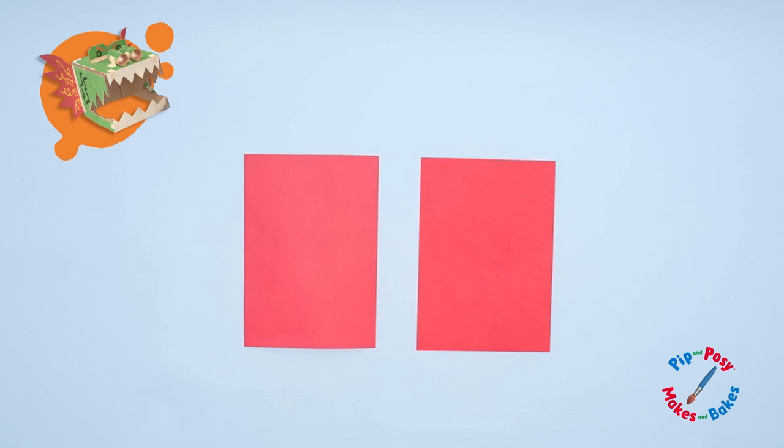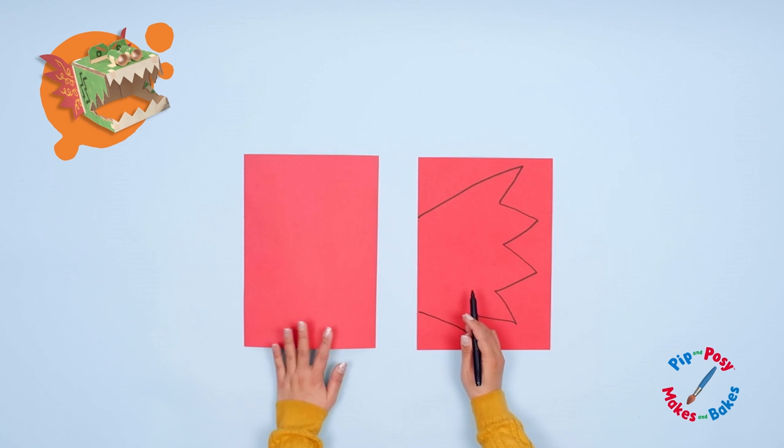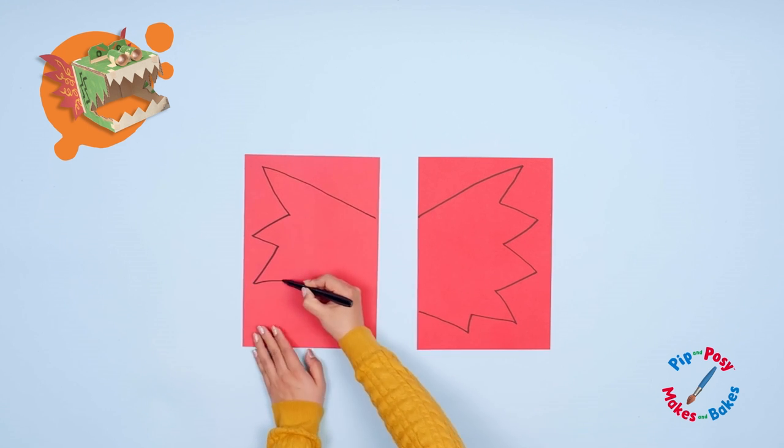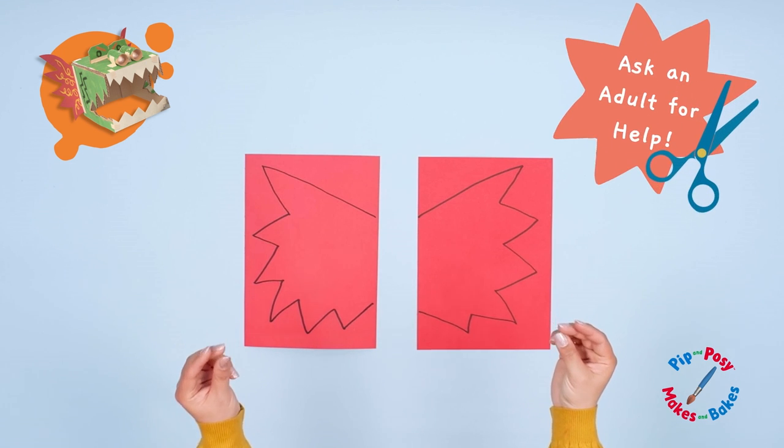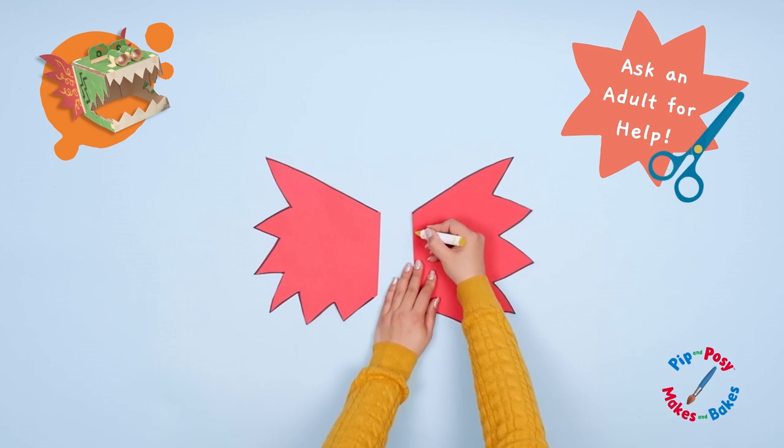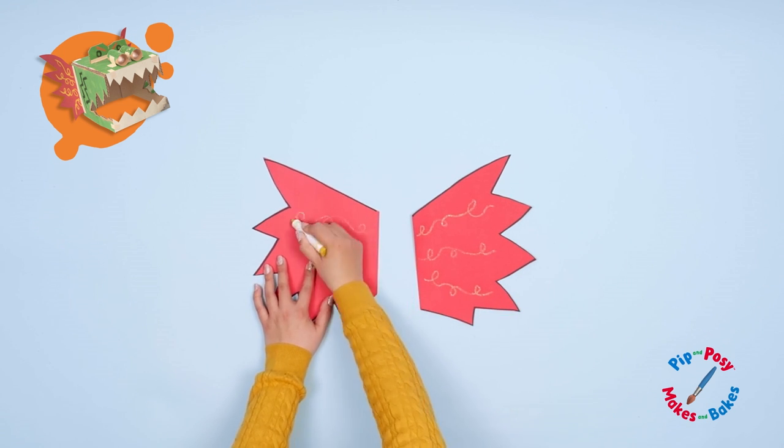Take your two pieces of red paper this way up. Draw a spiky line from the top to the bottom of the paper. These are for the spiky flaps at the side of the dragon's head. Cut along the lines you've just drawn. Use your crayons to decorate the red paper.